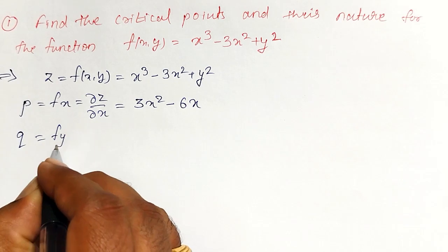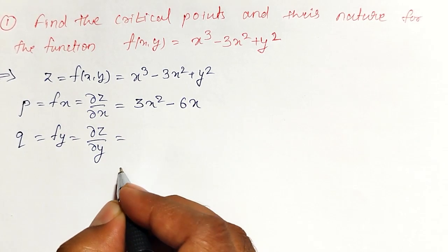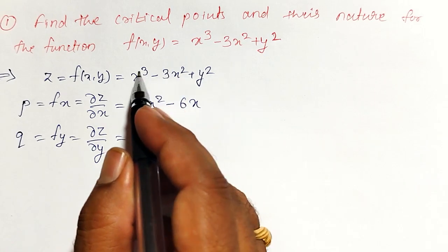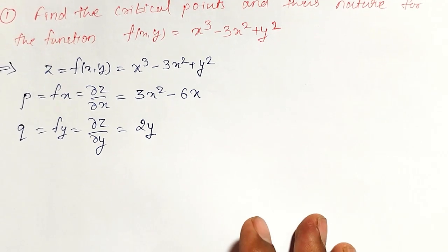Then q is equal to fy, that is partial z by partial y. I have to calculate partial derivative with respect to y. First two terms will become 0. Second term is 2y.